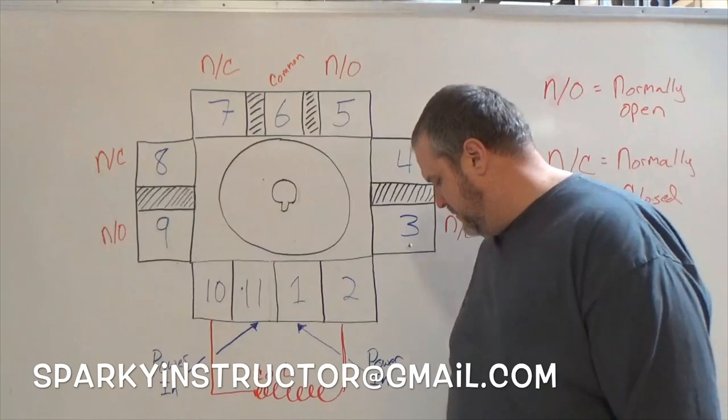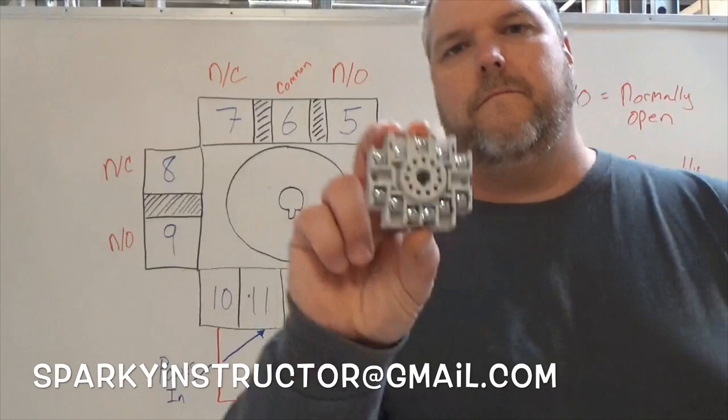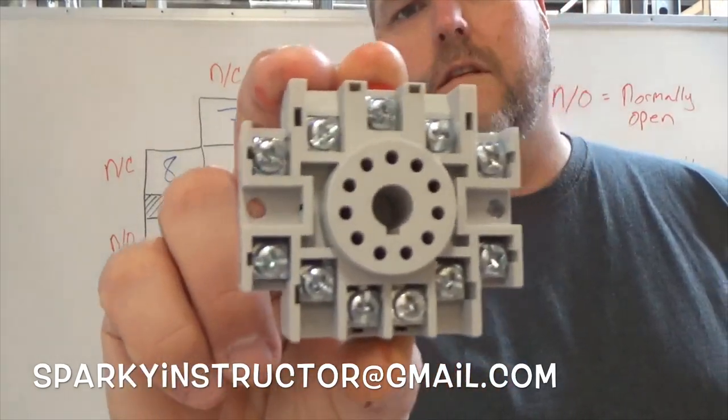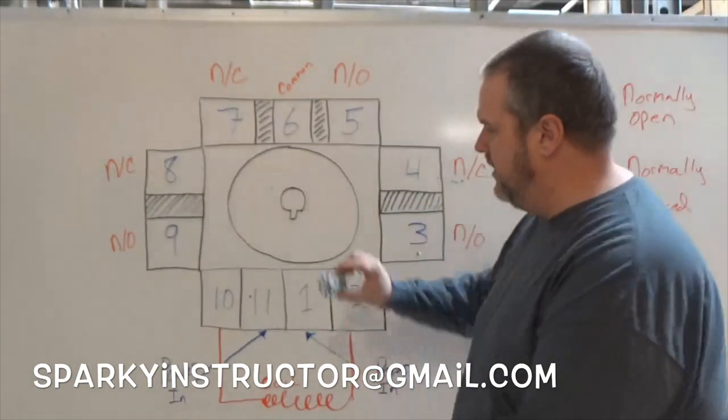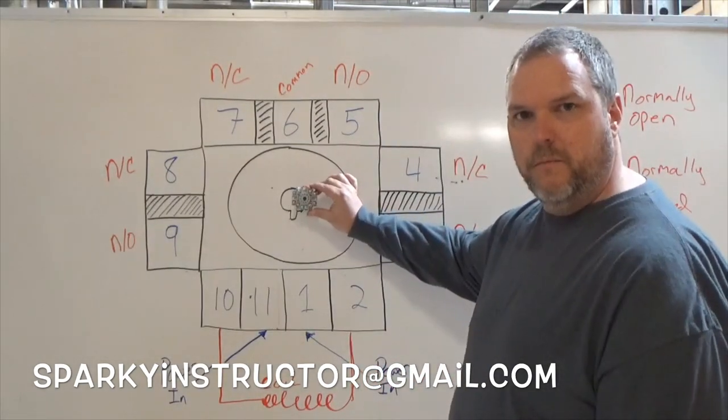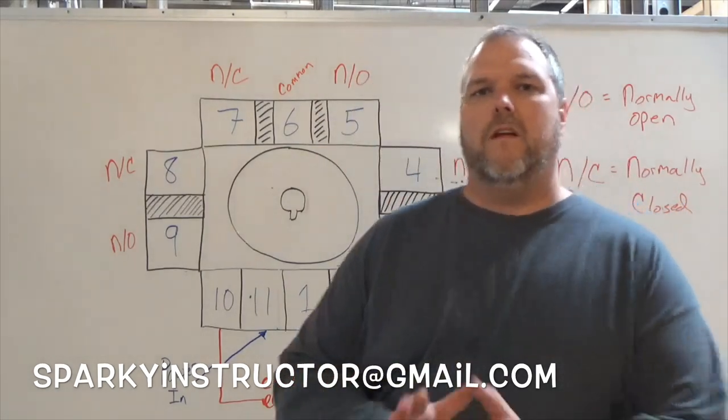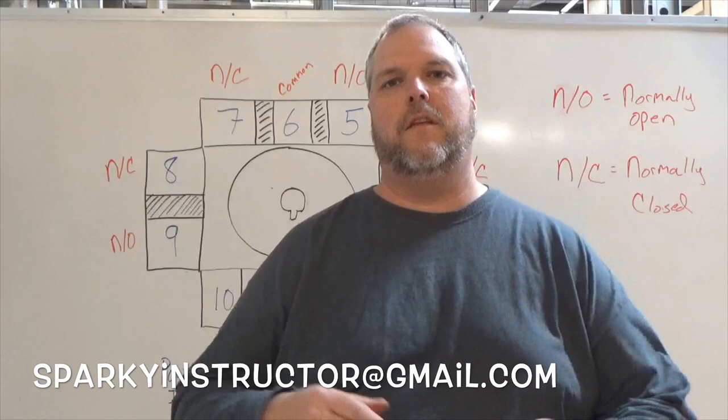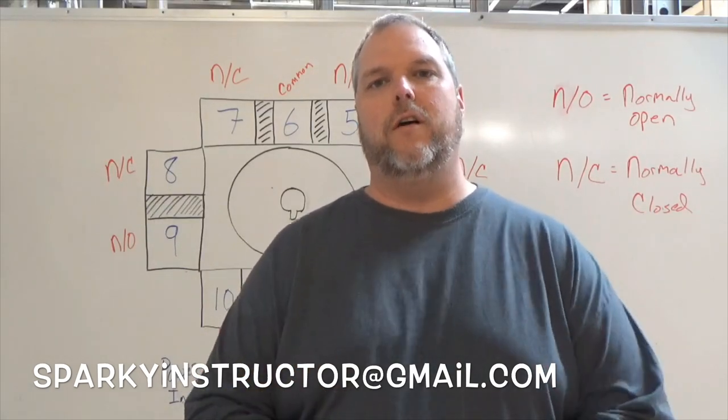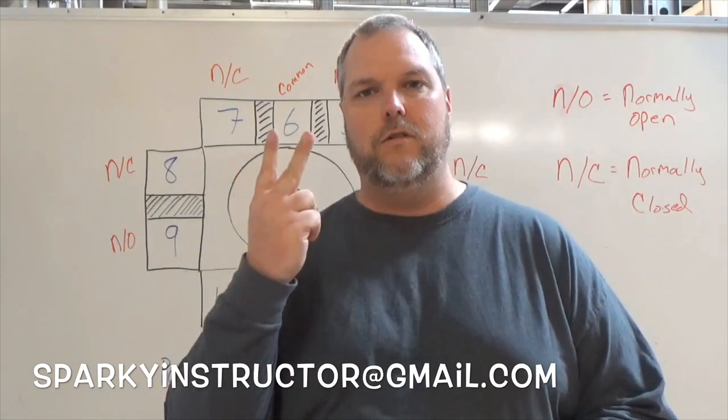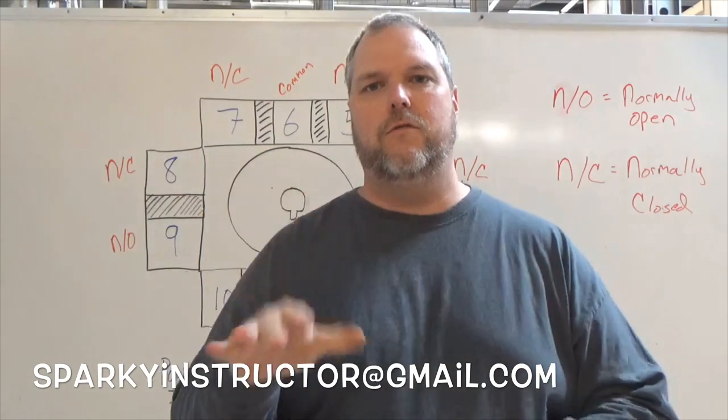So here, this is my base. You have an 11 pin base. What I did is I basically drew it a little bit bigger so that we can actually understand it. You can see what we're talking about. A couple of things you need to remember: your coil is the most important thing you need to remember. Your coil on an 11 pin is always going to be 2 and 10.